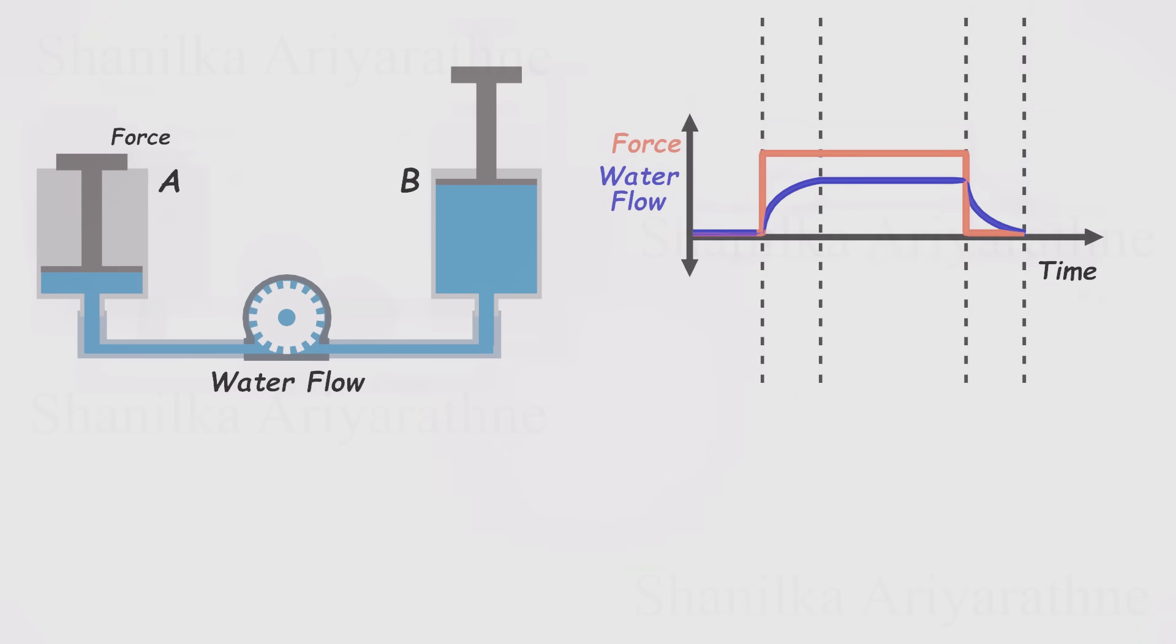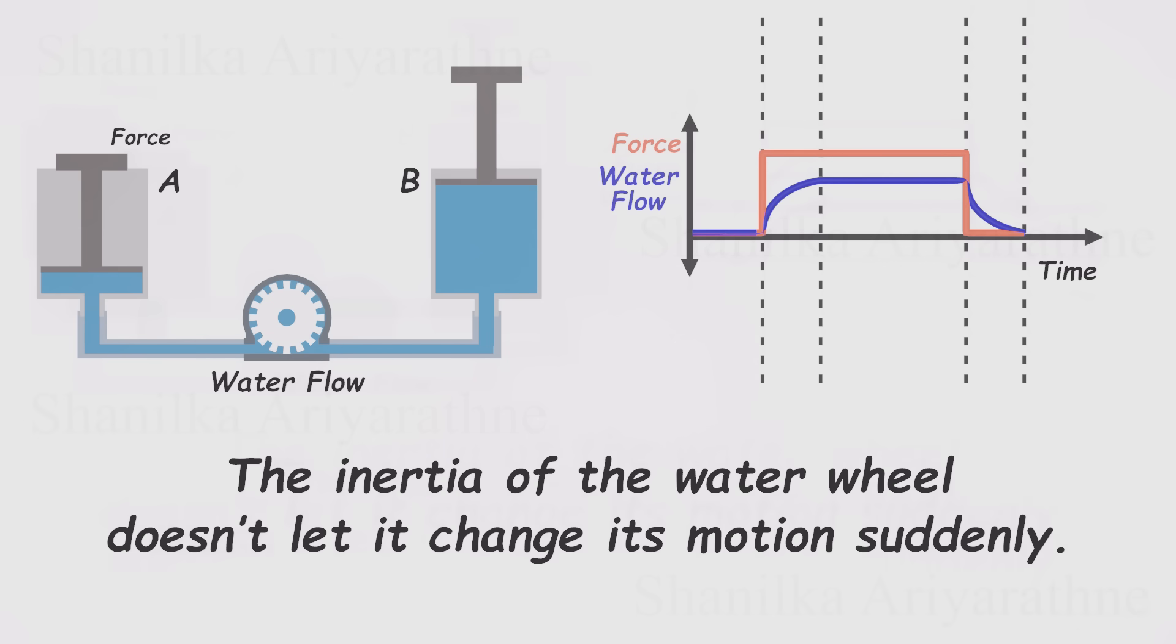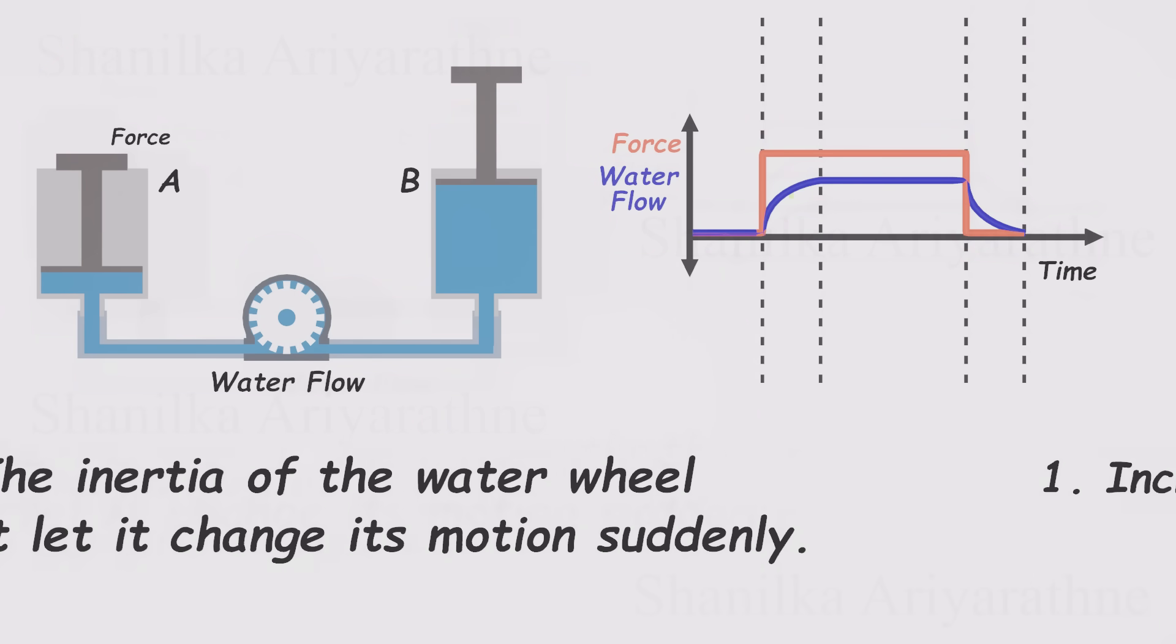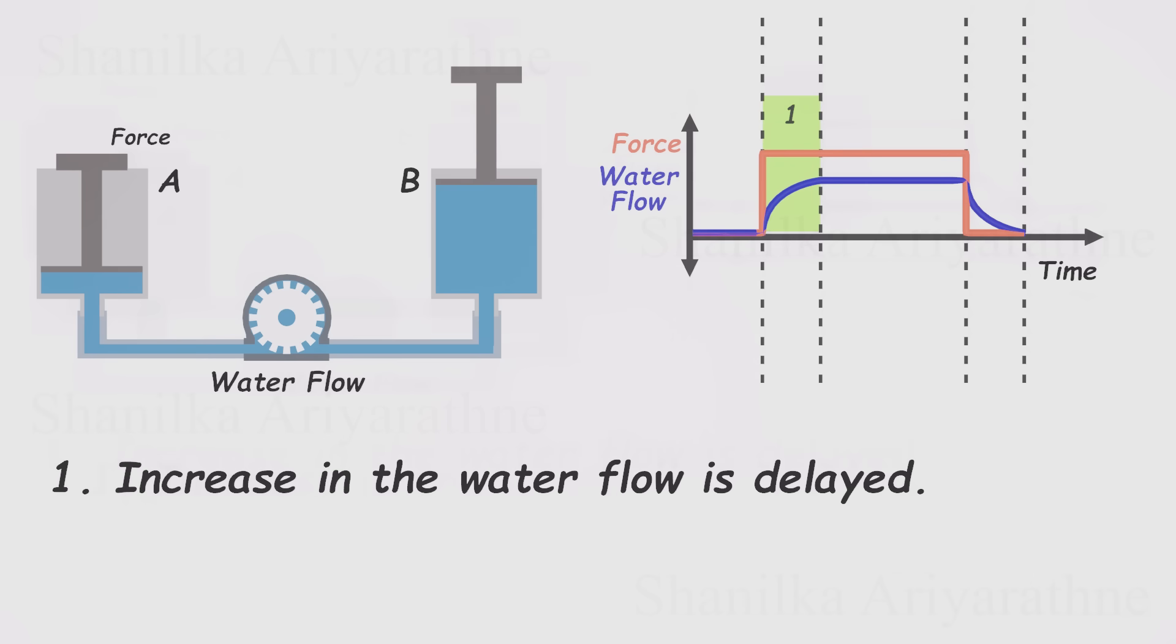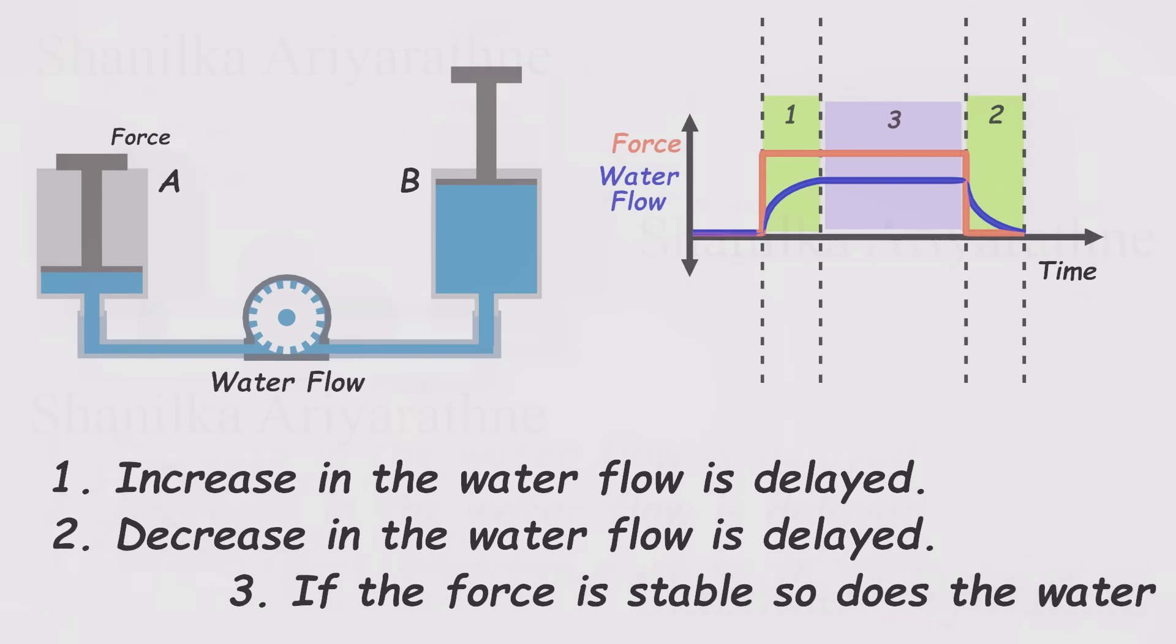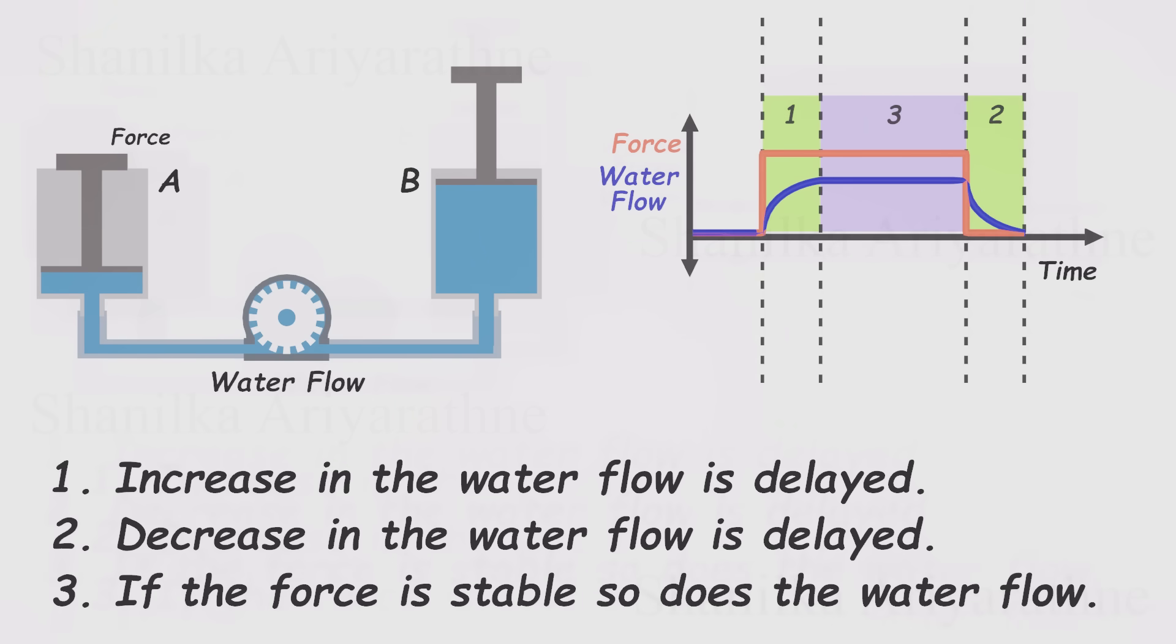If we compare the force and flow rate graphs, the difference becomes clear. The flow always lags behind the force. That's because the water wheel has inertia. It resists changes to its motion. It doesn't like starting or stopping suddenly. There are three key things to notice here. First, the water wheel delays the increase of water flow when you start pushing. Second, it also delays the decrease of flow when you stop pushing. And third, and most importantly, when the force stays constant, the flow stays steady too. In that case, it's almost as if the water wheel isn't there at all.